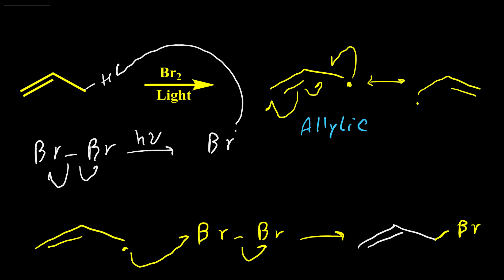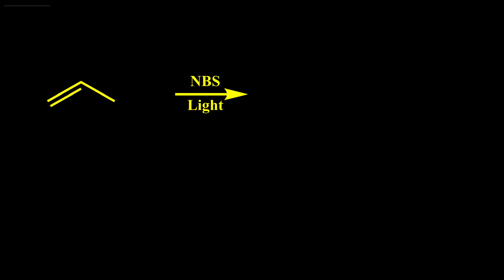In the next step, this allylic radical reacts with another bromine and we have the allylic bromination reaction. But performing this reaction with bromine has a huge problem: we shouldn't have a large concentration of bromine because bromine can also undergo addition reaction with the alkene. So instead of bromine, we use another reagent as a source of bromine.